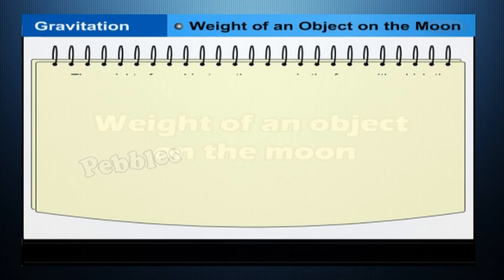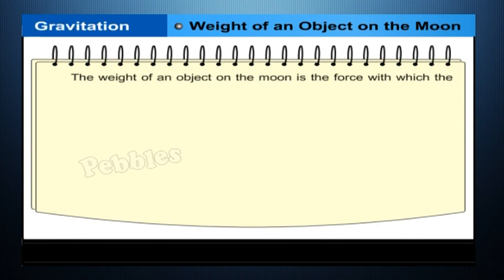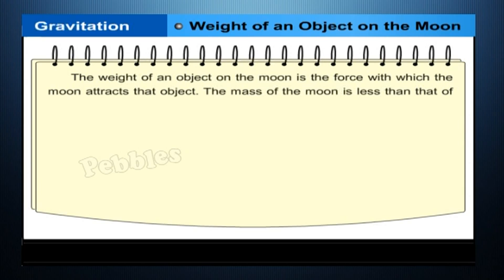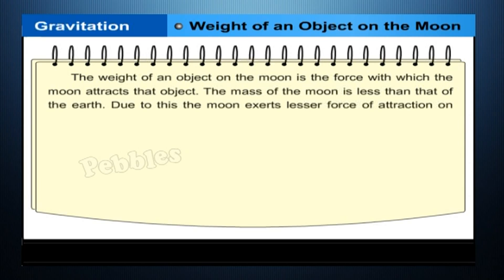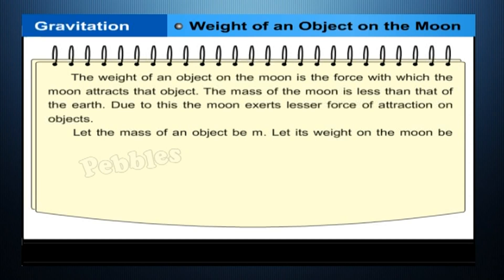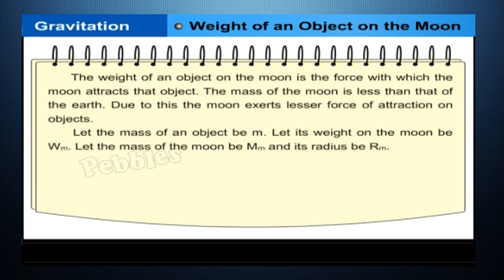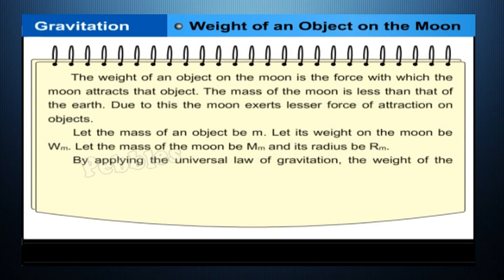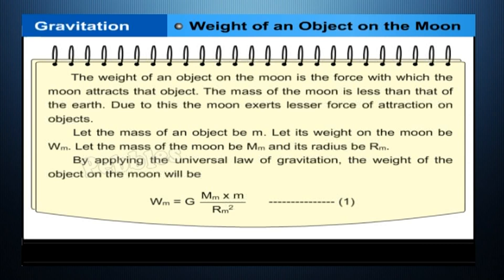Weight of an object on the moon: the weight of an object on the moon is the force with which the moon attracts that object. The mass of the moon is less than that of the earth, so the moon exerts lesser force of attraction on objects. Let the mass of an object be m, its weight on the moon be W_m, the mass of the moon be M_m, and its radius be R_m. By applying the universal law of gravitation, the weight of the object on the moon will be equation one.